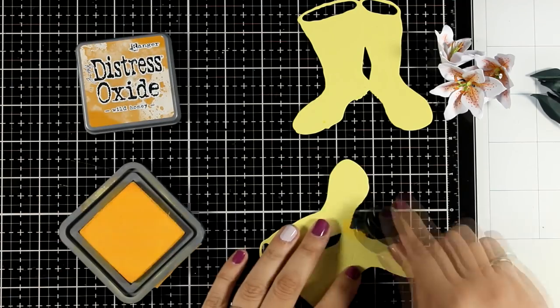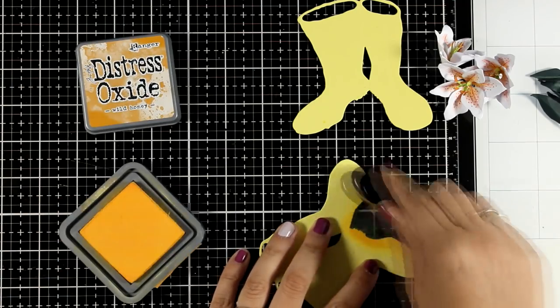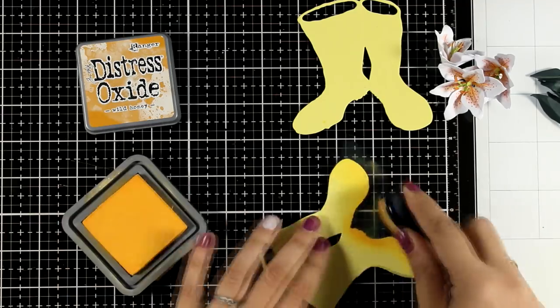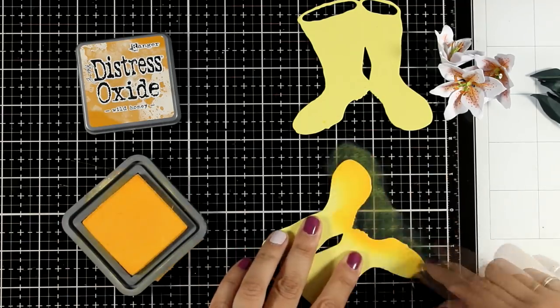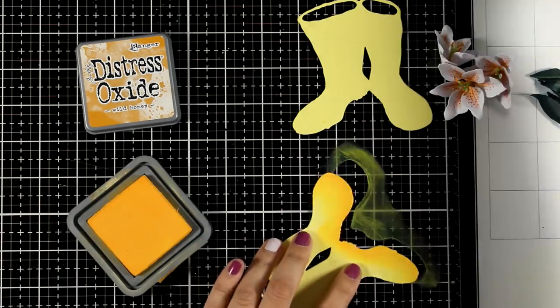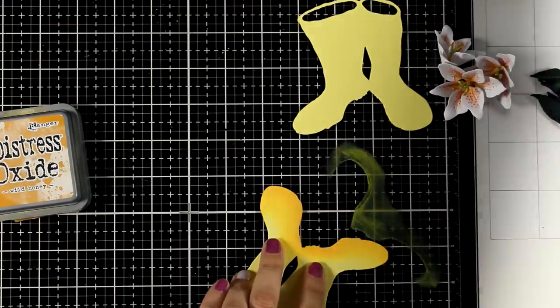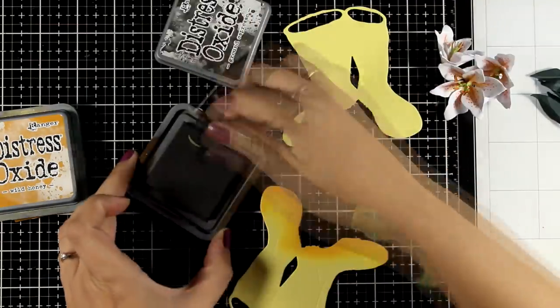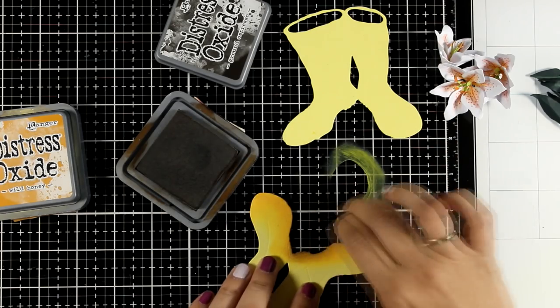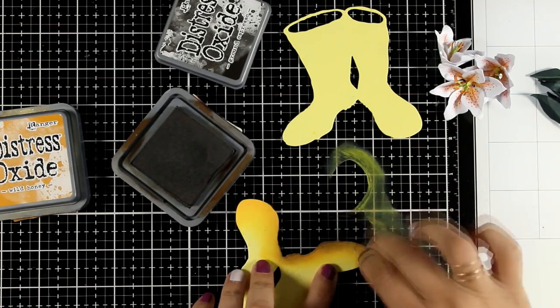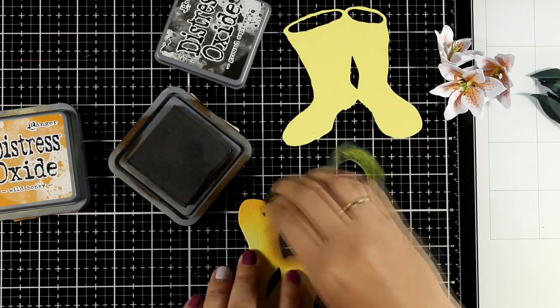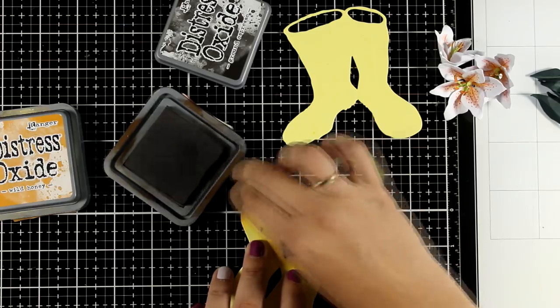Anyway, now I am going to work on the buds. For that, I just die cut them twice out of light yellow cardstock. As they are, they look quite flat. So I need to add some shadows to turn them kind of dimensional and more realistic. After all, I do have very dimensional flowers to go with those.